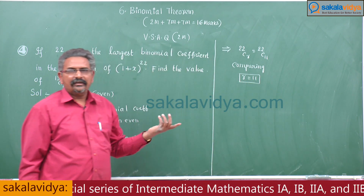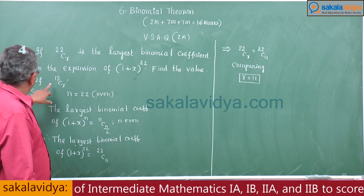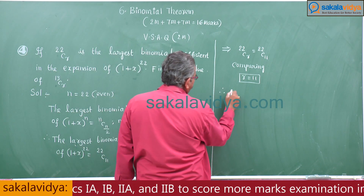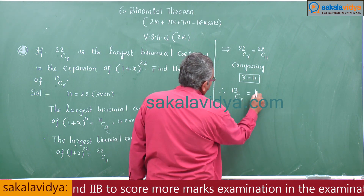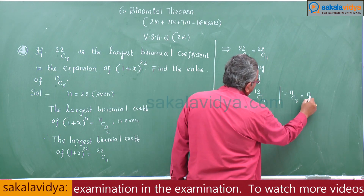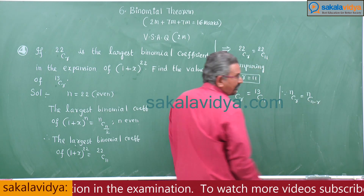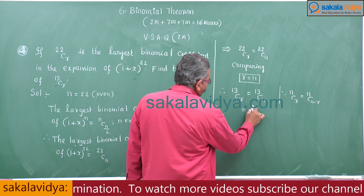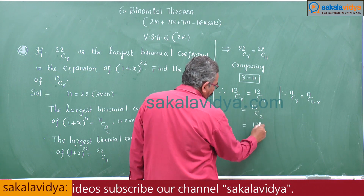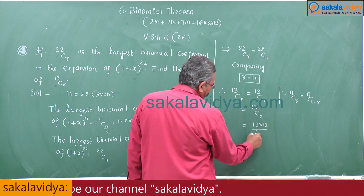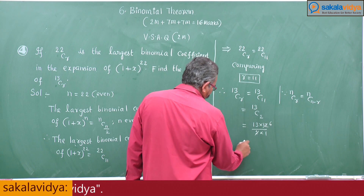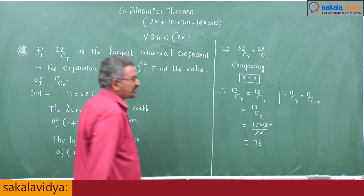We are not asked for r — we need to evaluate 13Cr = 13C11. Using the formula nCr = nC(n−r), we get 13C11 = 13C(13−11) = 13C2 = (13 × 12) / (2 × 1) = 78. So the answer is 78.